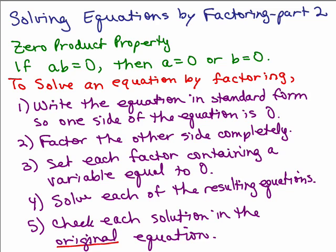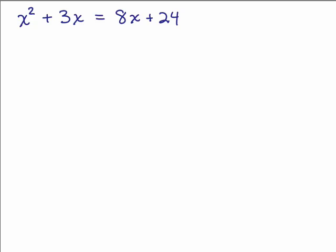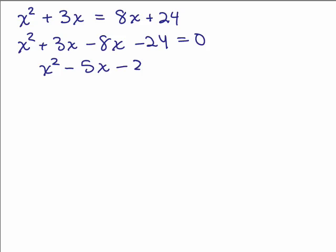So let's do an example. This has an X squared term so we're going to have to solve this by factoring by setting everything on one side of the equation equal to zero. So I have to subtract 8X and subtract 24 and then combine like terms.